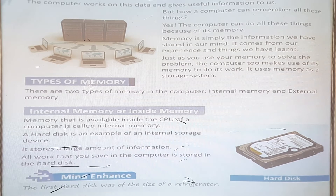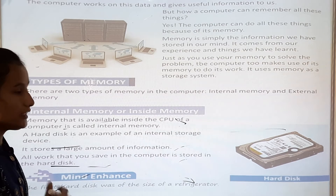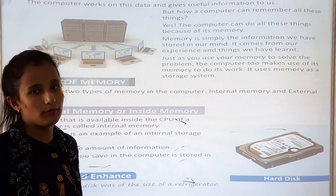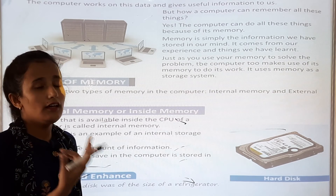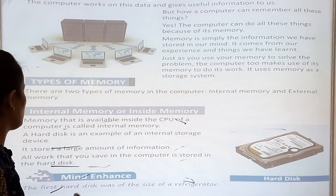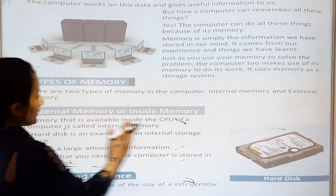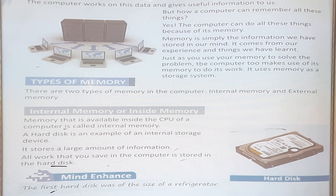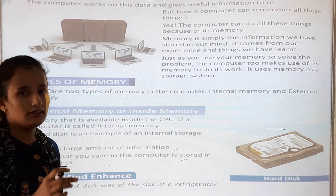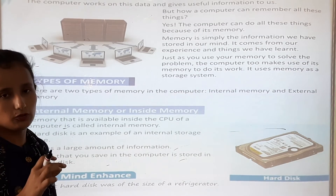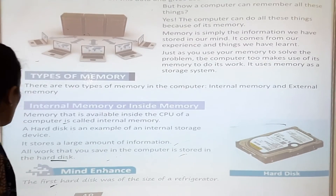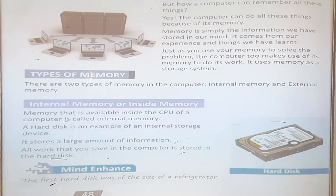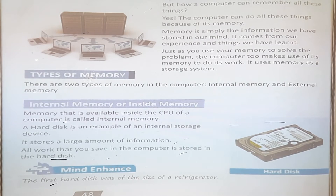There are two types of memory in the computer — internal memory and external memory. Internal memory is the memory that is available inside the CPU of a computer. So the memory that is available in the CPU is called internal memory. A hard disk is an example of an internal storage device.